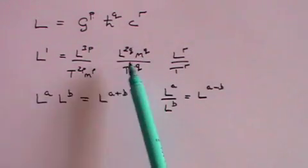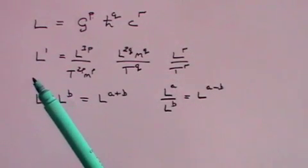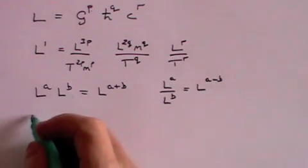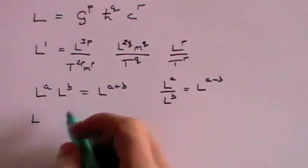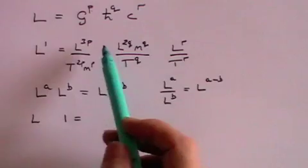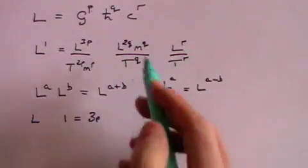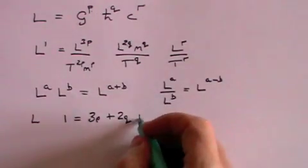Similarly, the m and the t terms have got no equivalent values on this side. So if we do it in terms of the powers, what we can say is that looking first at all the l terms on this side of the equation we have the power 1. On this side of the equation we have 3p plus 2q plus r.